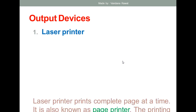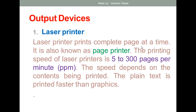The laser printer prints a complete page at a time, which is one advantage, and that is why it is also known as a page printer. The printing speed of this printer ranges from 5 to 300 pages per minute. Within a minute you can print 5 to 300 pages — it depends upon the content you are printing. Plain text is printed faster than graphics.